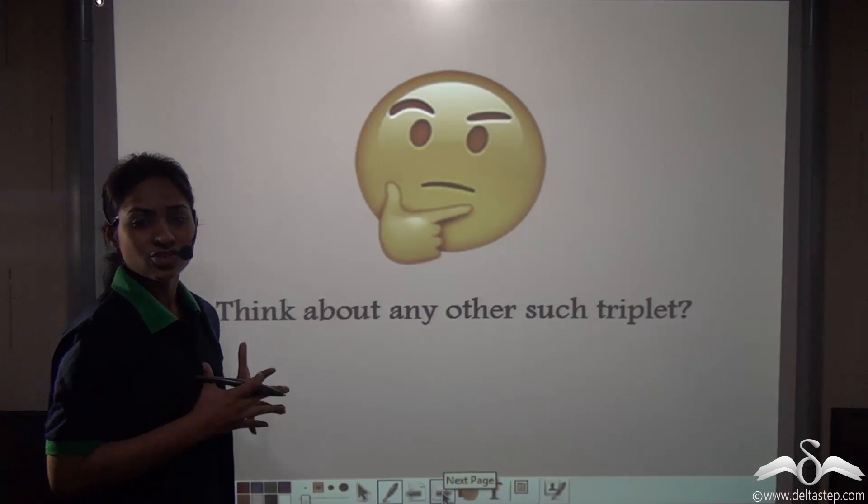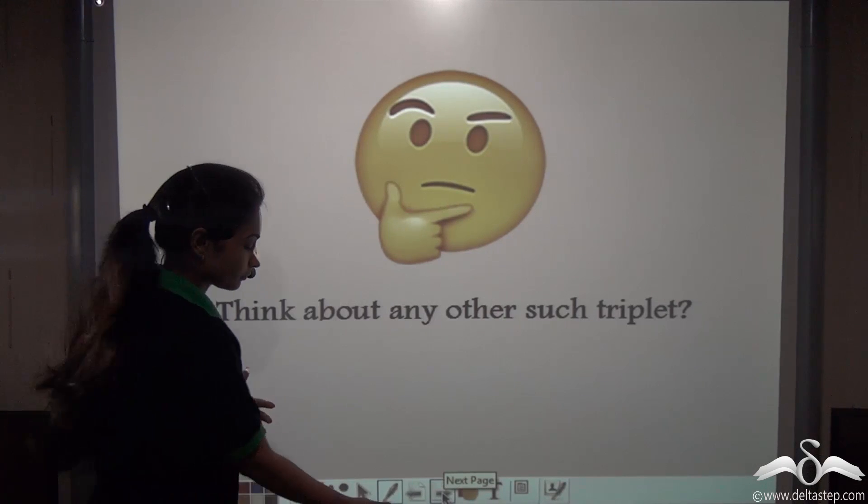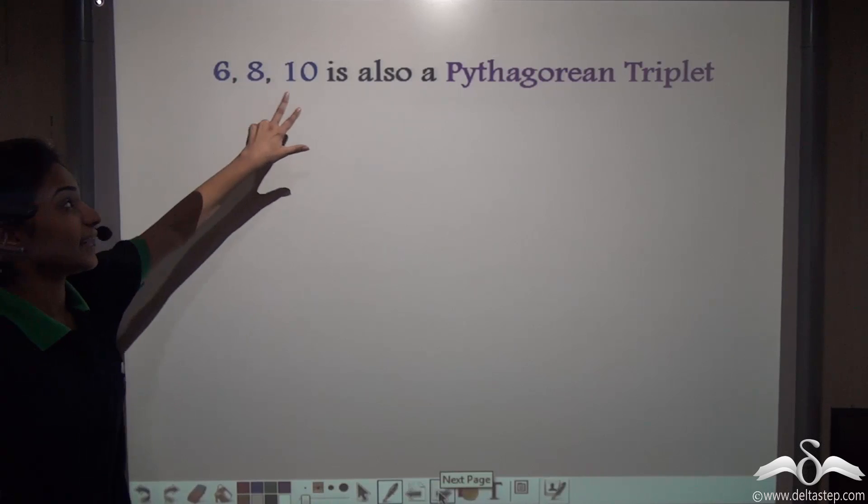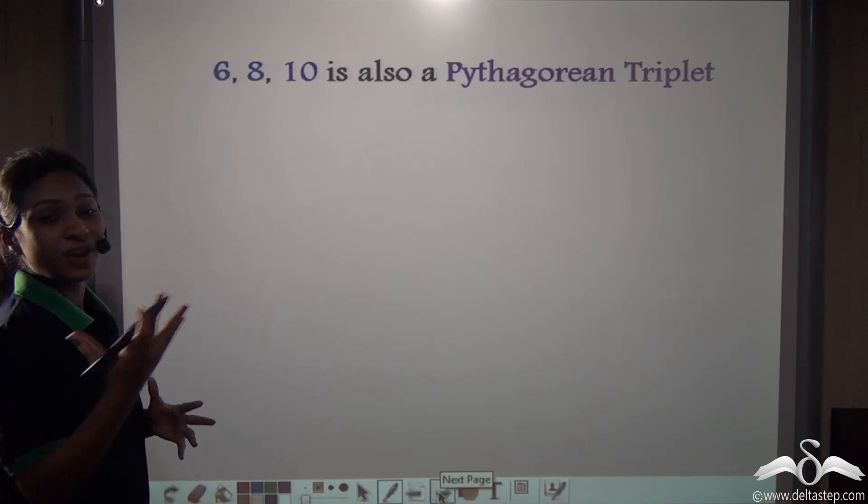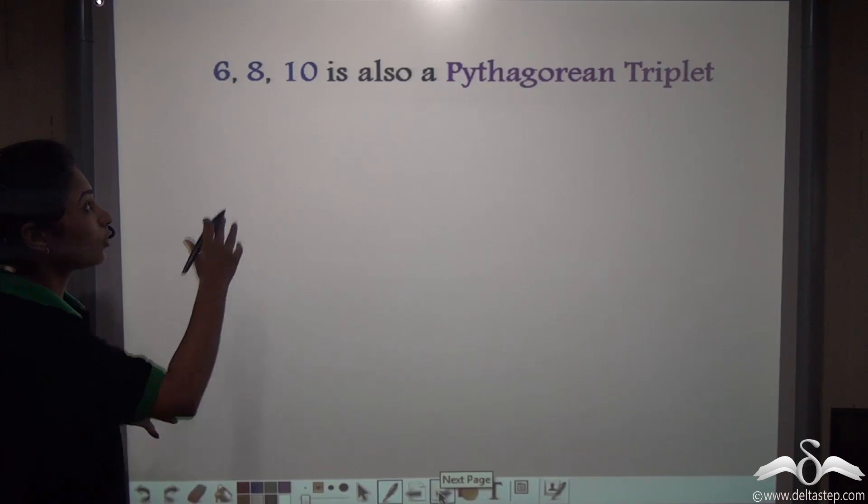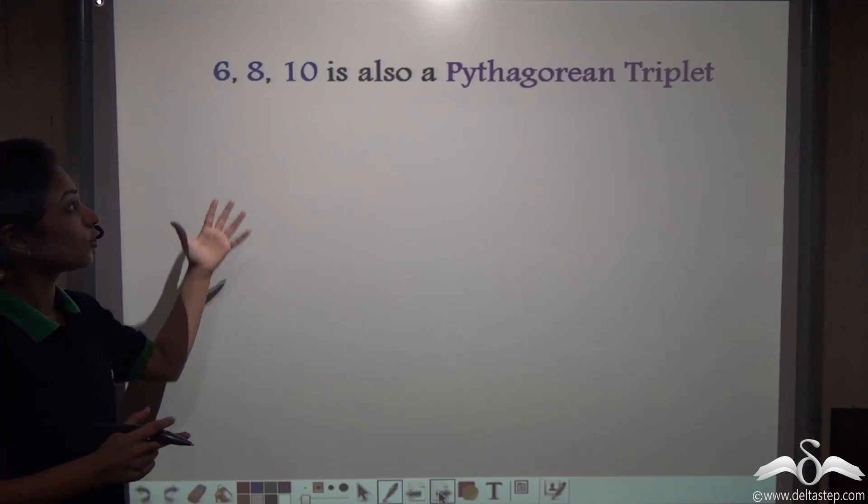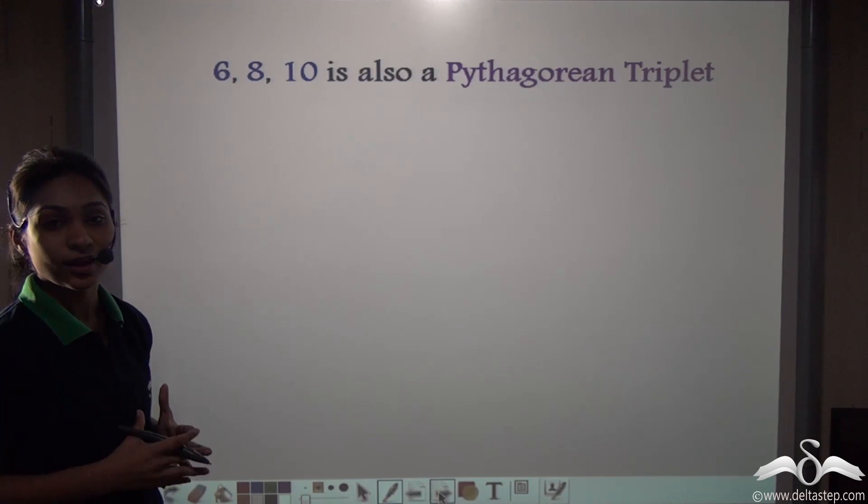Think about any such triplet. Well, 6, 8, and 10 is also a Pythagorean triplet. Can you just verify that for me? Find out 6 squared plus 8 squared and see whether you get 10 squared or not. Check it out.